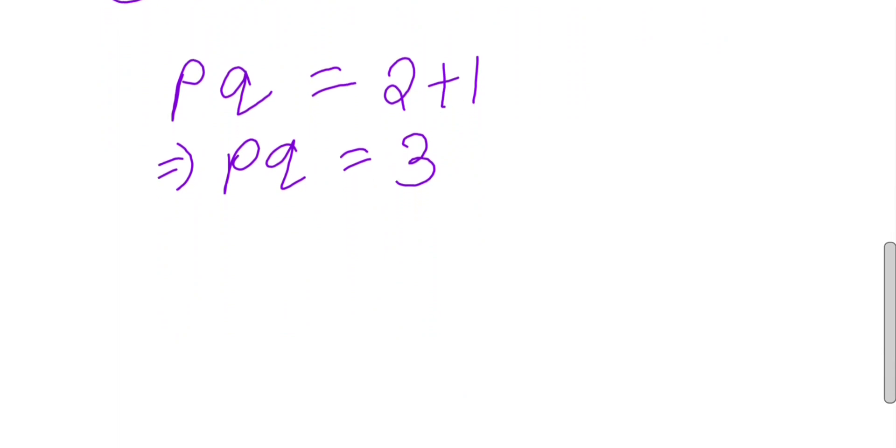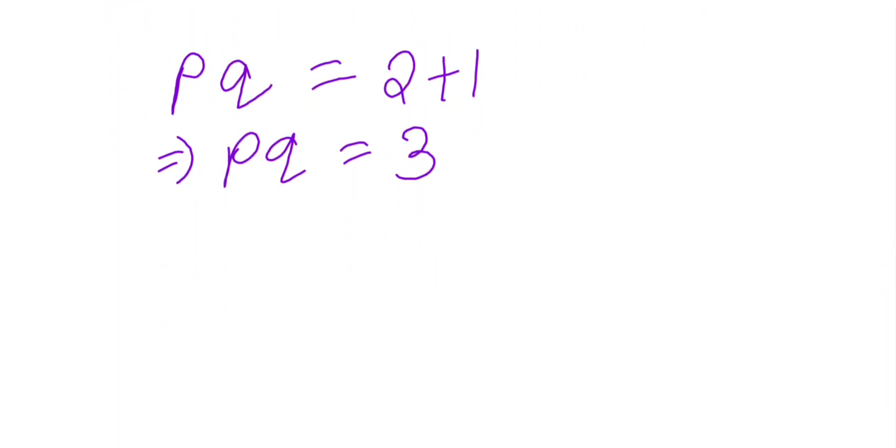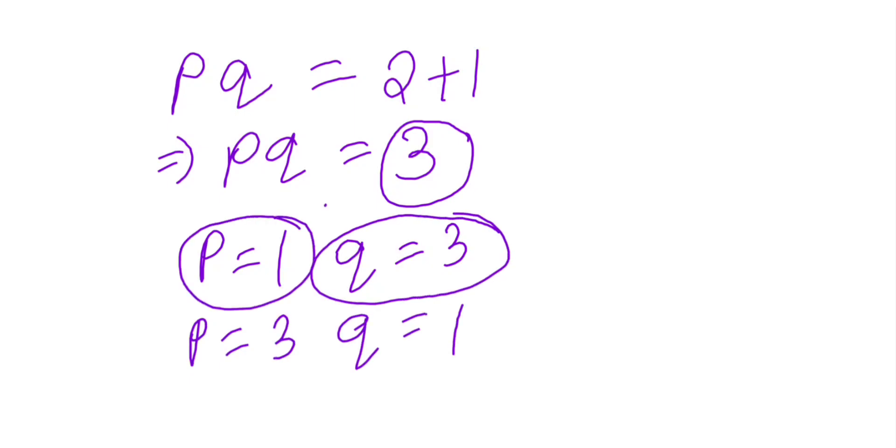And because both p and q are prime, there will be no solution, because this is a prime number. Either p equals 1 and q equals 3, or p equals 3 and q equals 1. But clearly this is prime but this is not prime, and this is prime but this is not prime, so we'll get no solution according to our condition.